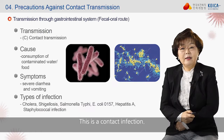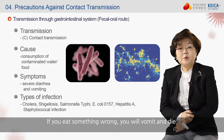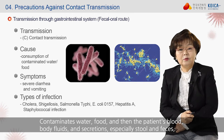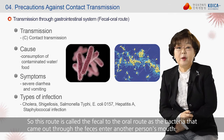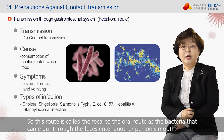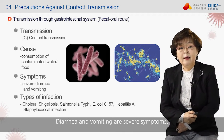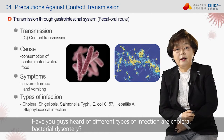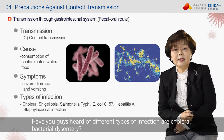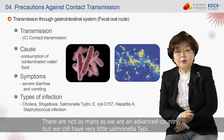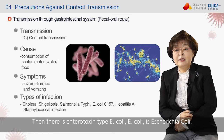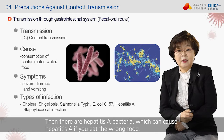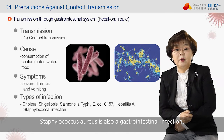Contact infection occurs when contaminated water, food, or the patient's blood, body fluids, secretions — especially stool and feces — play a major role. This route is called the fecal-to-oral route, as bacteria excreted through feces enter another person's mouth. Diarrhea and vomiting are severe symptoms. Examples include cholera, bacterial dysentery, salmonella, enterotoxin-producing E. coli, hepatitis A from contaminated food, and Staphylococcus aureus — all are gastrointestinal contact infections.